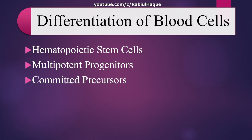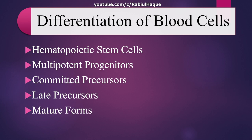These committed precursors are either of lymphoid or myeloid potential. Then from these committed precursors, we get late precursors, and ultimately from the late precursors, we get the mature forms of blood cells — which can be erythrocytes, granulocytes like neutrophil, eosinophil, and basophil, or other cells like monocytes and platelets.